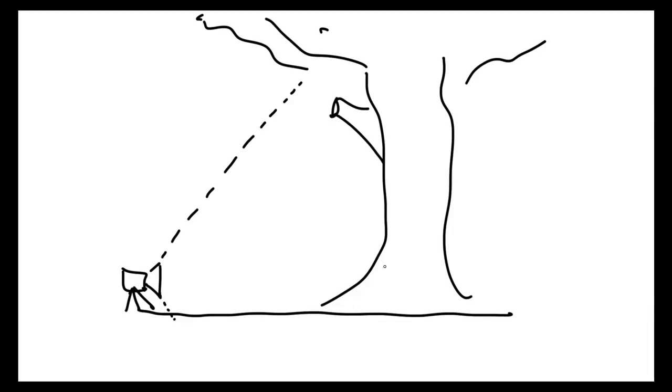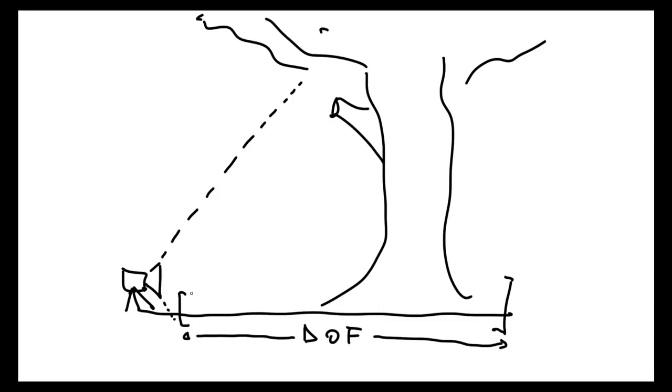Problems that you'll encounter. The first problem is going to be the depth of field. As a landscape photographer you want almost everything in focus, but because you're so close to the ground and the foreground elements are so close to your camera, you'll need to do focus stacking and keep your aperture at f8.